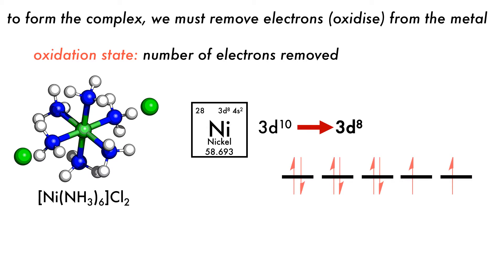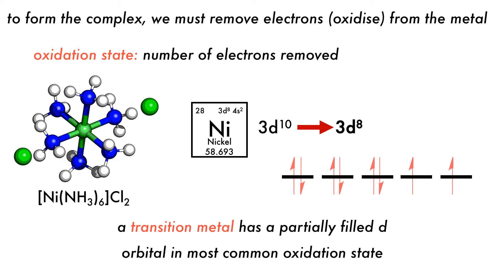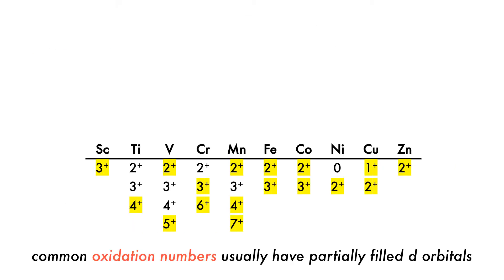Now, this d8 has three partially filled orbitals, and so nickel in this complex fits our definition of a transition metal. Here are some common oxidation states of the first row transition metals. The common oxidation states of d-block metals often have partially filled d orbitals.